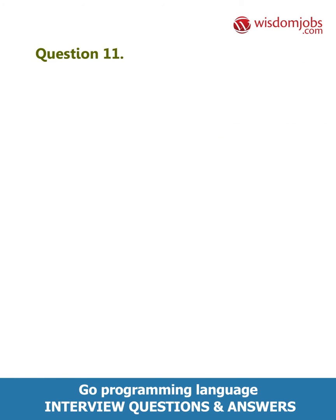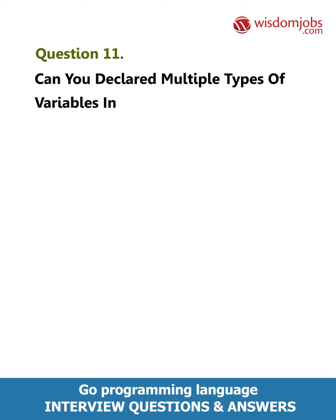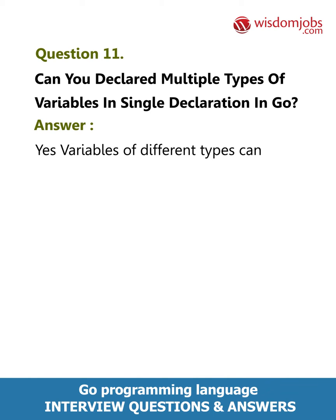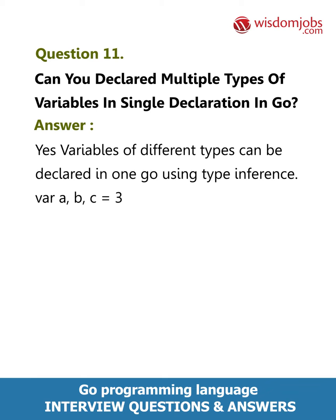Question 11: Can you declare multiple types of variables in a single declaration in Go? Answer: Yes. Variables of different types can be declared in one Go statement using type inference.